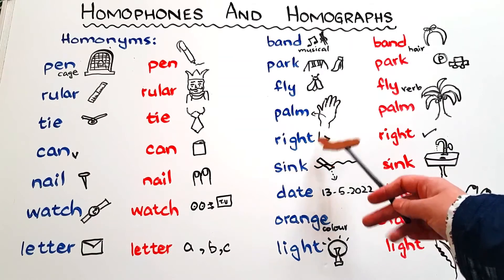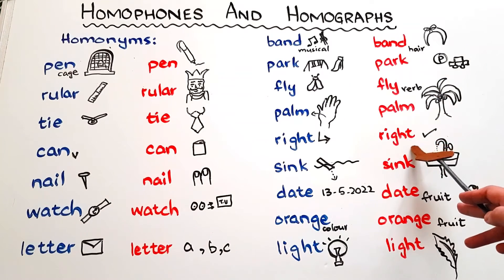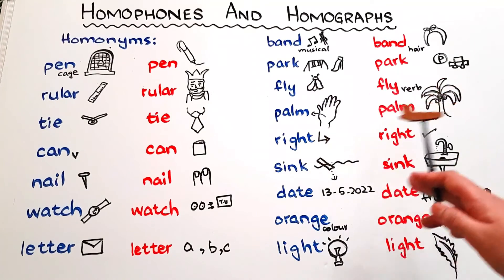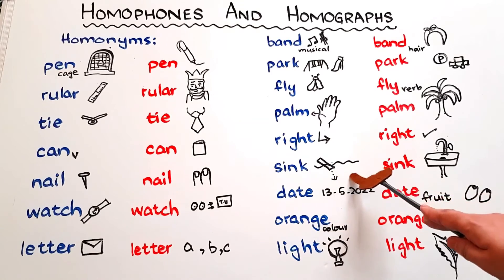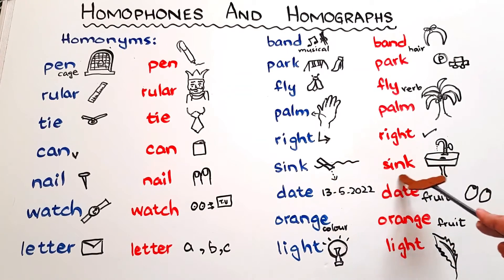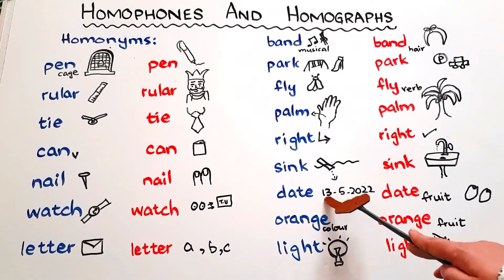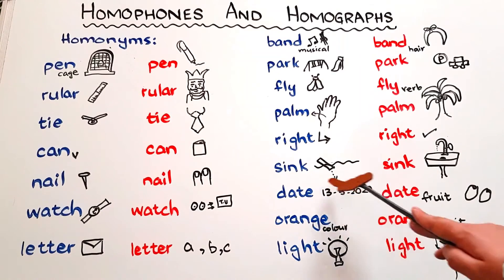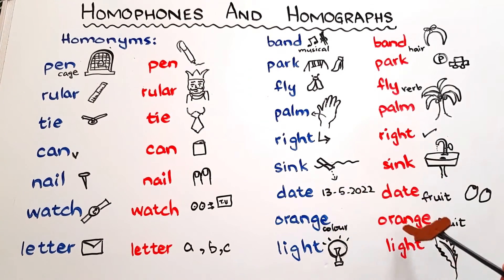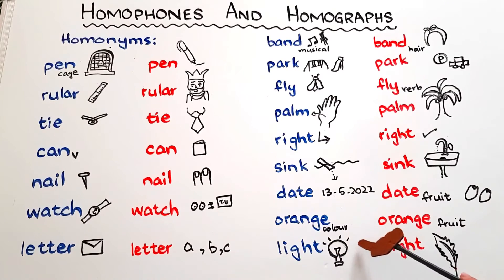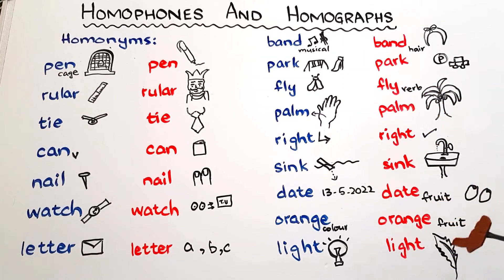Then we have 'right' — this means direction, as in 'turn right' — and 'right' meaning correct, as in 'it's right'. 'Sink' — when something is not floating and is drowning, it is sinking — and 'sink', the place where we wash our dishes. 'Date' — today is the 13th of May 2022, that is the date — and 'date', the fruit. 'Orange' — the color orange — and 'orange', the fruit.